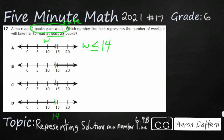With B, it is greater than 14 but has an open circle. An open circle means we cannot include 14 itself — we could include 14.00001 but not 14 — so B is W greater than 14. C has a closed circle instead, which means we can actually include 14, so C is W greater than or equal to 14. D is less than 14 with an open circle, so D is W less than 14.